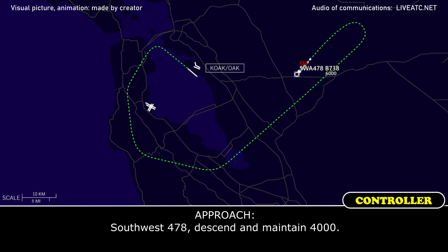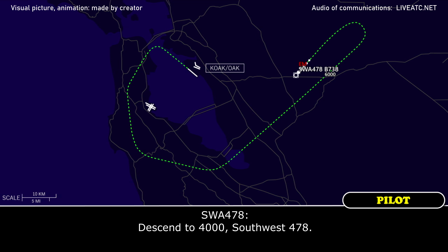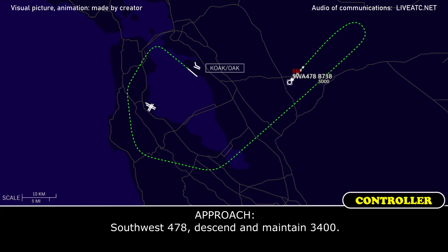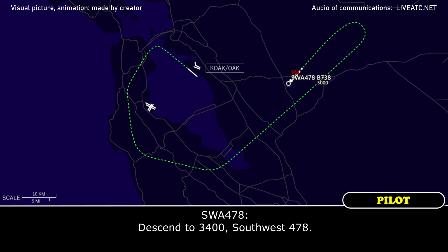ATC: Southbound 478, descend and maintain 4,000. Southbound 478: Descend to 4,000, southbound 478. ATC: Southbound 478, descend and maintain 3,400. Southbound 478: Descend to 3,400, southbound 478.